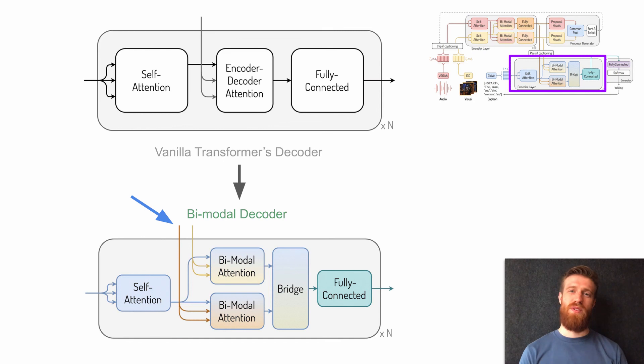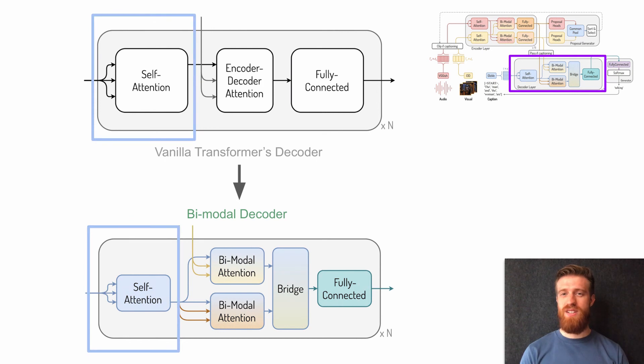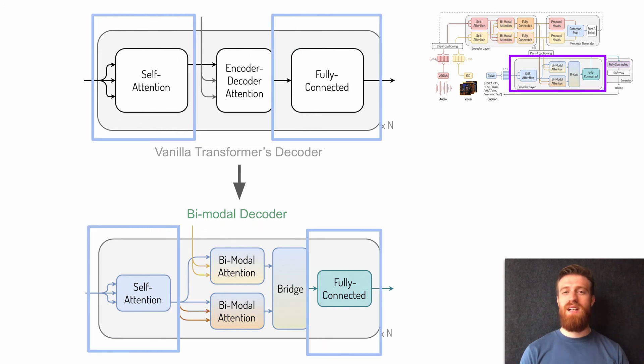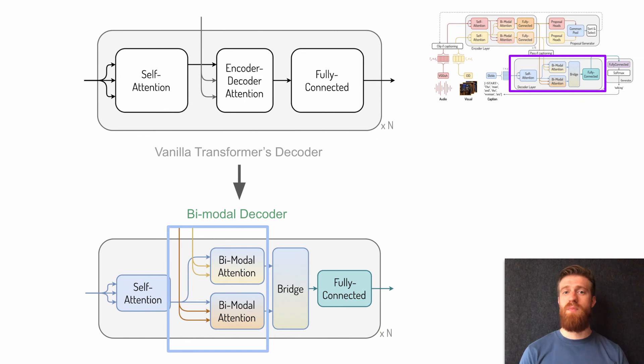The bimodal decoder inputs both streams from the encoder and previously generated caption words, and consists of four blocks: self-attention, bimodal attention, bridge layer, and position-wise fully-connected net. The second and the third blocks are replacing the encoder-decoder attention in the original transformer decoder. The self-attention and position-wise fully-connected net are similar to the ones that are used in the bimodal encoder. Both bimodal attention blocks allow the decoder to attend to each position within both streams of features from the encoder at each layer. The bridge block fuses features at each position from both streams.